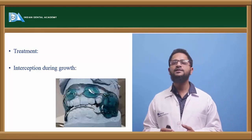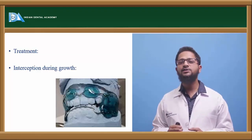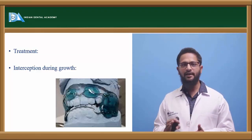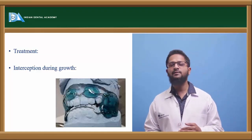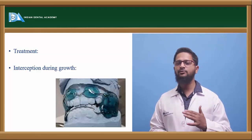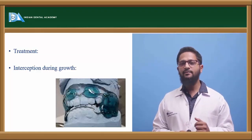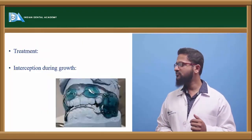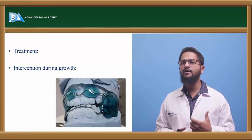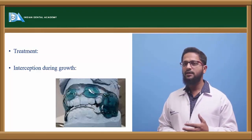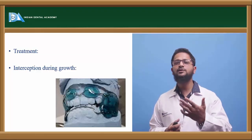Treatment of Class III malocclusion can be done in the following steps. First is interception during growth. Class III malocclusion should be intercepted as soon as it is recognized, because if not corrected at an early age, it becomes further worse as age advances. As soon as it is diagnosed, it can be intercepted by giving myofunctional appliances like FR3 to restrict the growth of the mandible. A lateral cephalogram has to be taken to evaluate which jaw is at fault. If it is the mandible, restriction of mandibular growth can be done by giving a chin cup appliance to restrict further mandibular growth.